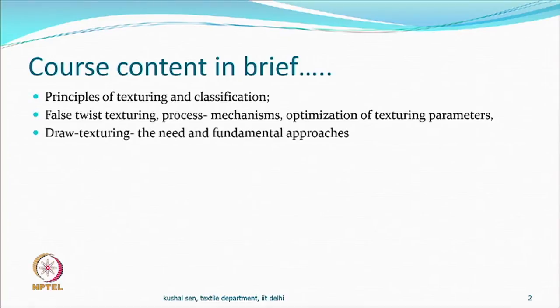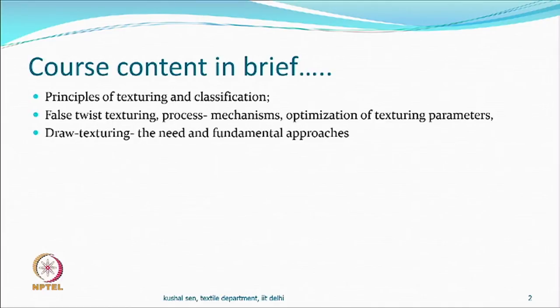Within this category you also have a draw texturing process, where the filaments to be textured are not fully drawn — they are undrawn or partially oriented yarns. What to do in such cases is what we call draw texturing. The fundamental aspects of this are going to be quite important as far as the learning component is concerned.